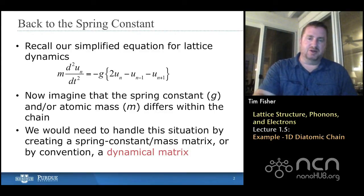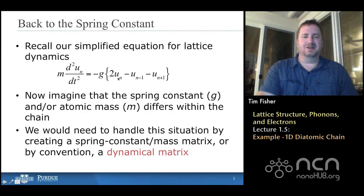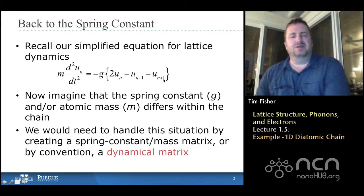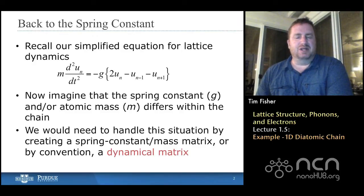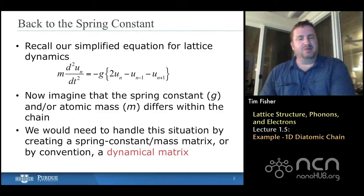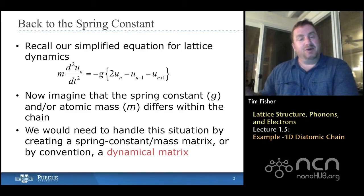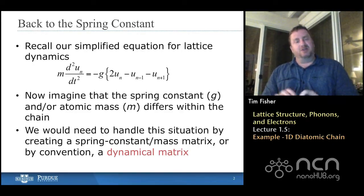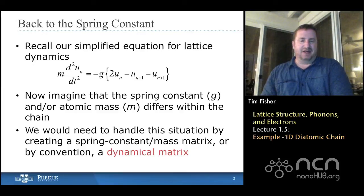We have a discrete equation here. So these subscripts on u, the u's are the atomic displacements at sites n, n-1, n+1. And so this is a discrete equation. Now we have to think about what we would need to do to add differences in mass or differences in spring constant or differences in direction so things can vibrate in multiple directions.